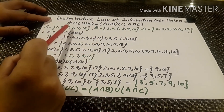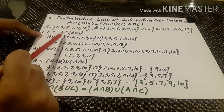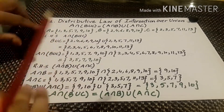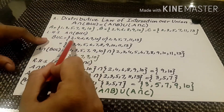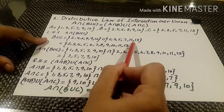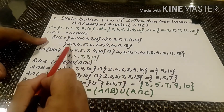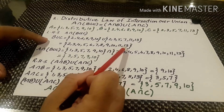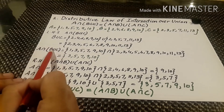We will prove the law by taking first the left hand side, that is A intersection (B union C). In B union C we write set B union set C and we unite the values: 2, 3, 4, 5, 6, 7, 8, 9, 10, 11 and 13 are the values of the set B union C.